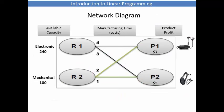So now we structure the problem in a network diagram. The source is the available capacity for each resource. The cost arcs are the required manufacturing times, and the destination is the product itself. As this problem can be described as a network diagram, it can also be solved using linear programming.